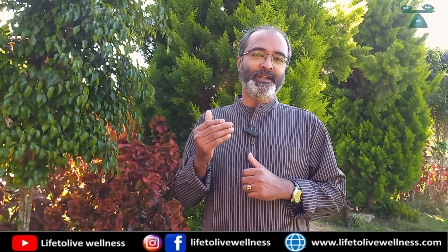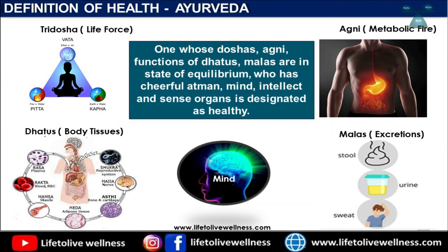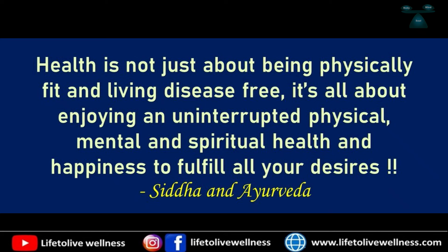If you try to understand the definition of health as defined by Ayurveda, it says a person is healthy only when his three doshas — the three important life forces — seven dhatus, the tissue systems, agni, the digestive fire, and three excretions, the three malas, are all in equilibrium. Additionally, his mind, five senses, and heart — atma — must be in a blissful condition. Only then can he fulfill all his desires through good physical and mental health. So health is not just being disease-free; it is about utilizing good physical and mental faculties to fulfill all needs, wants, and desires in life.